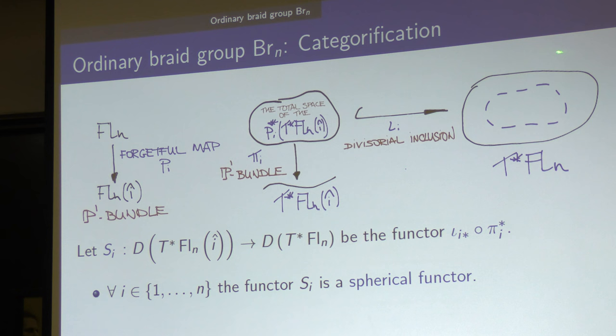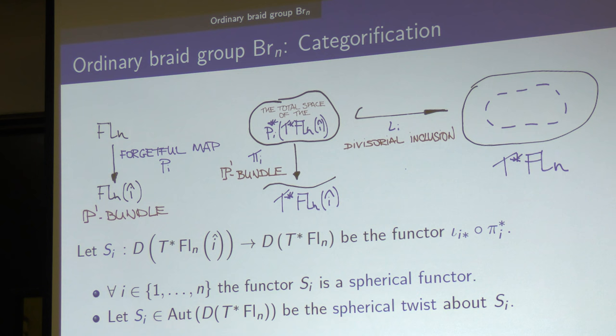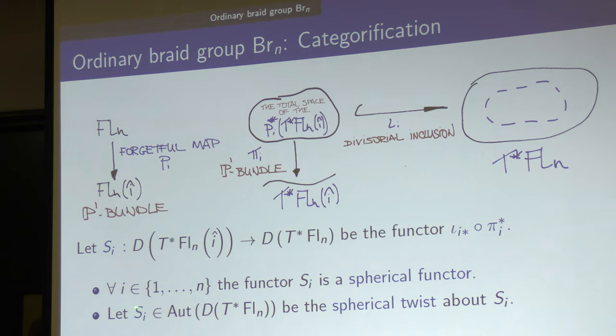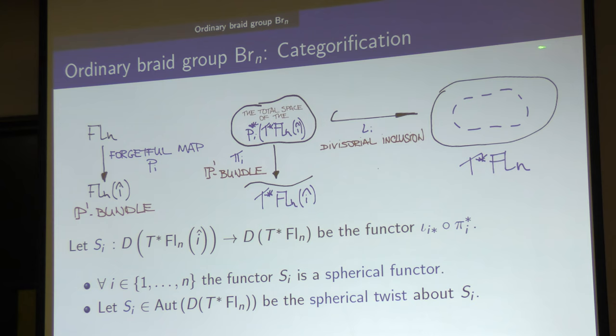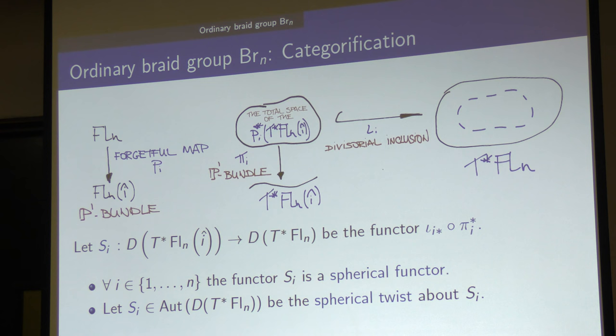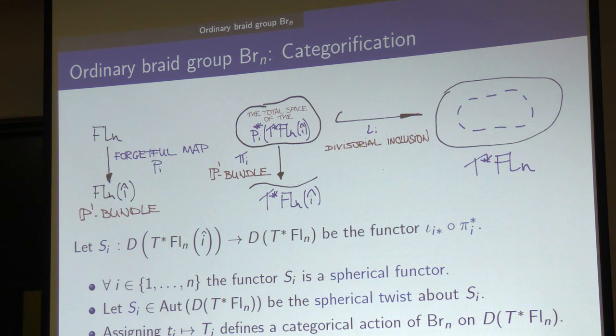Define S_i to be the functor from the derived category of this partial flag variety to the derived category of the complete flag variety, by taking first the pullback to this divisor and then taking the direct image. For each i from 1 to N−1, this functor is a spherical functor. By varying i, you get a bunch of functors from the derived category of each partial flag variety to the same derived category of the complete flag variety. Each of these functors is spherical. A spherical functor produces an auto-equivalence of the target variety — the so-called spherical twist — and of the source variety, called the spherical co-twist.